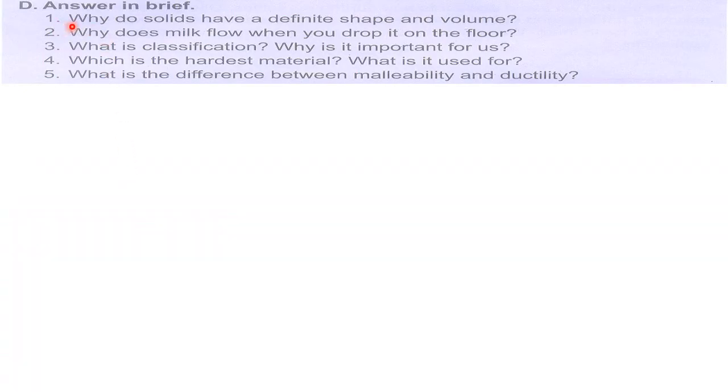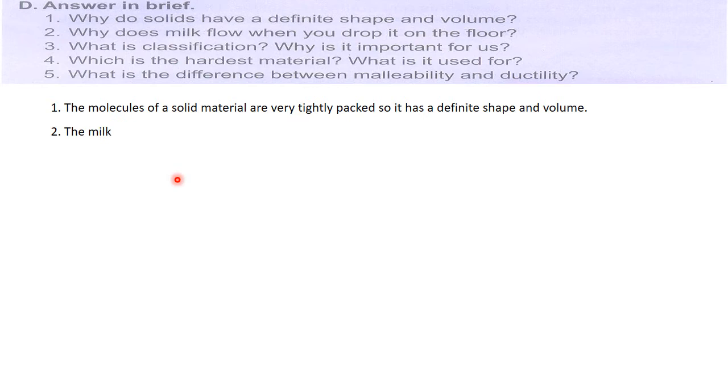Now we have to answer in brief: why do solids have a definite shape and volume? The answer is the molecules of a solid material are very tightly packed, so it has a definite shape and volume. Why does milk flow when you drop it on the floor?